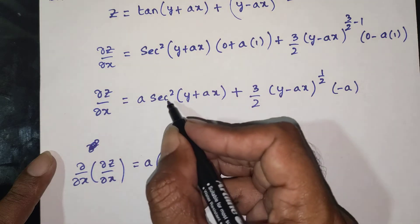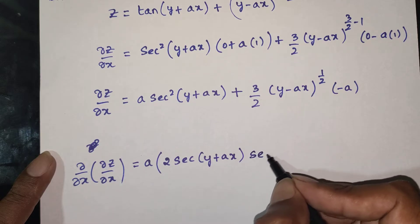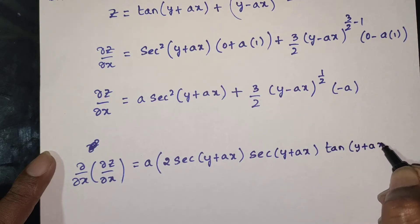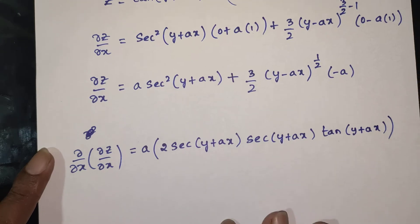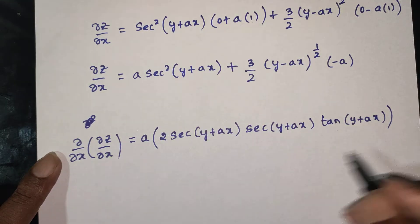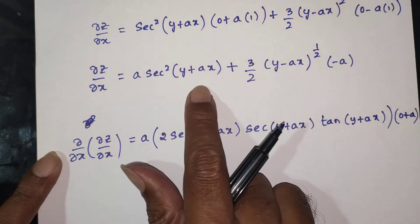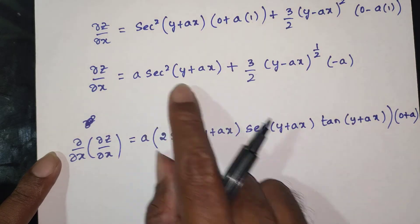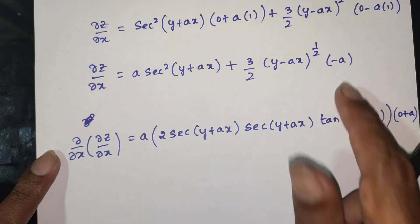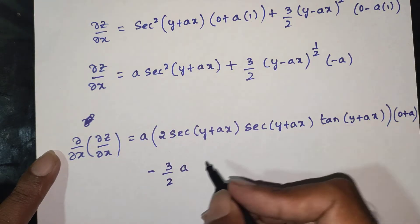Differentiating sec²(y + ax): 2·sec(y + ax) times the derivative of sec(y + ax), which is sec(y + ax)·tan(y + ax), multiplied by a (the derivative of y + ax with respect to x). This gives 2a·sec²(y + ax)·tan(y + ax).